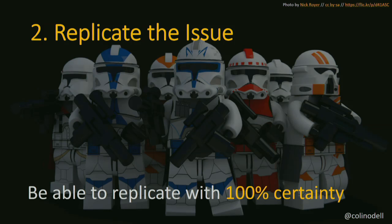Step two: try to replicate the issue. Identify which steps make the issue occur, and do so with 100% certainty. If you can only replicate it 50% of the time, when you think you've solved it and the steps look fine, you don't know if it's fixed or just that lucky 50%. You need to replicate with 100% certainty so you can positively confirm your solution is valid later.